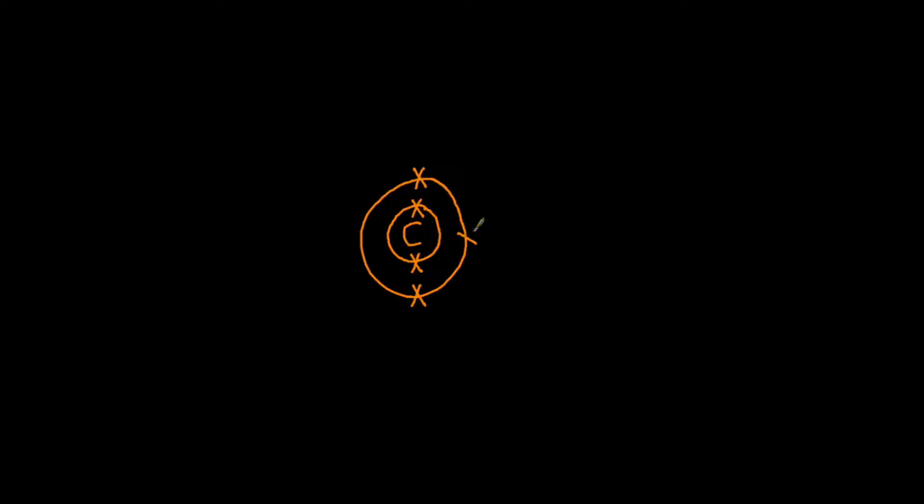One of the ways in which it does this is by sharing electrons with other atoms. Most notably, here you can see it doing that with hydrogen. Hydrogen has one electron, so if carbon shares electrons with four hydrogens, it then has eight electrons on its outside shell.